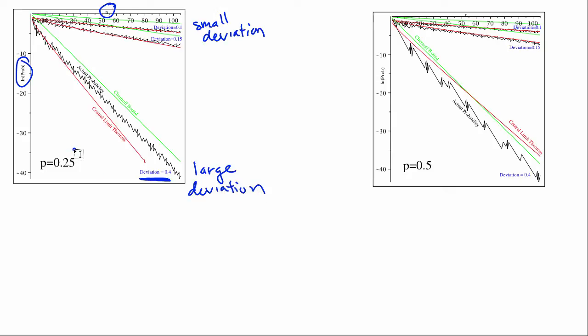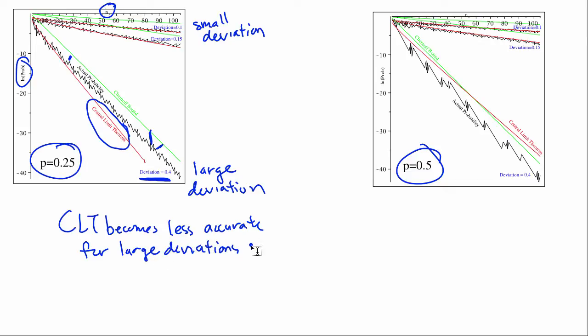And notice we also have a parameter p, which makes the graphs a little bit different. But let's see what's going on. So remember how Chernoff is an upper bound? We can see here that the Chernoff probability will always be higher than the actual probability, which is exactly what we want. But notice how the central limit theorem becomes less and less accurate for the large deviation as n increases.